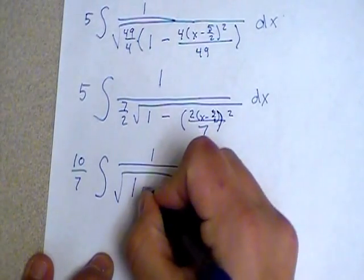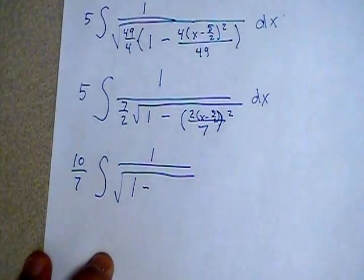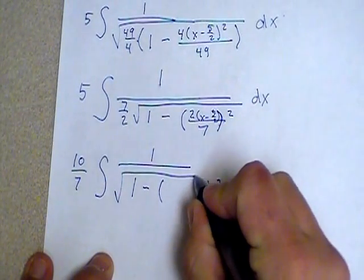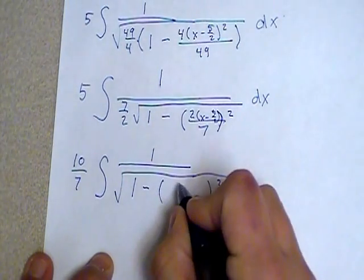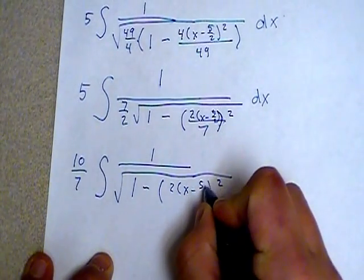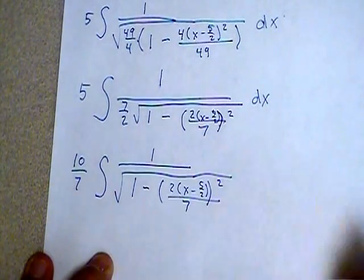And then in the denominator, try to write it a little bit more clearly on this line. I have one great big quantity being squared now, and that great big quantity is a 2 times the quantity x minus 5 halves all over 7.